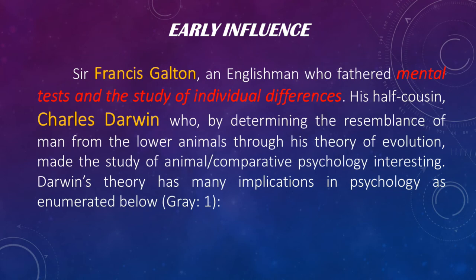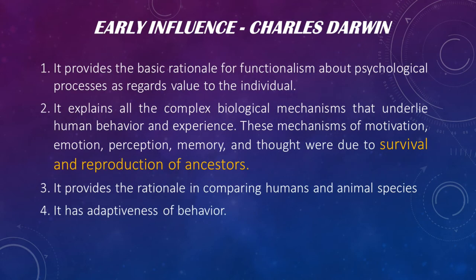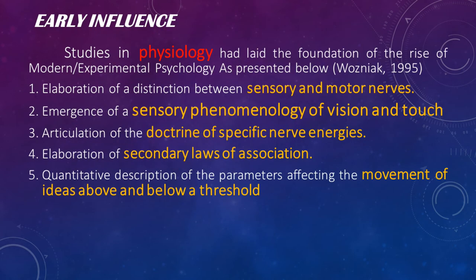Francis Galton was an Englishman who started studying behavior through mental tests and the study of individual differences. He was half-cousin to Charles Darwin, who — by determining the resemblance of man to lower animals through his theory of evolution — made the study of animal comparative psychology interesting. Darwin's theory has many implications in psychology: it provides the basic rationale for functionalism regarding psychological processes; it explains complex biological mechanisms underlying human behavior, including motivation, emotion, perception, memory, and thought — all due to the survival and reproduction of ancestors; and it provides the rationale for comparing humans and animal species regarding the adaptiveness of behavior.